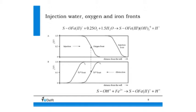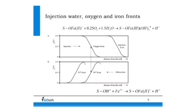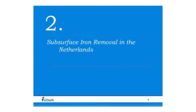Looking at the graphs: the vertical axis shows concentration and the horizontal axis shows distance from the well — left is the well, right is distance. When injecting water, oxygen is consumed, so your injection water travels into the ground but the oxygen front lags behind. The same happens during abstraction: the iron 2 is delayed because it is absorbed in the ground. So it is a matter of oxidation during injection and adsorption during abstraction.